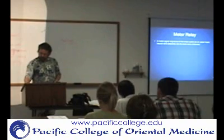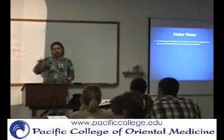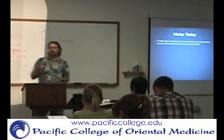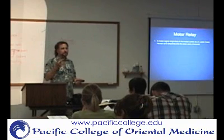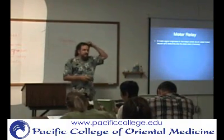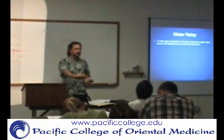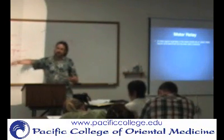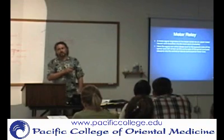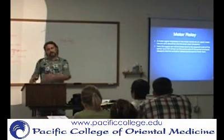Now let's do the motor relay — upper motor neuron and lower motor neuron. How many nerve fibers do we have for motor? Two. So you have upper motor neuron and lower motor neuron. It starts in the cerebral cortex; the first motor neuron goes down to the level of the spinal cord, usually the ventral or anterior horn. Then it synapses to the lower motor neuron, which crosses and goes out to the muscle. 90% of fibers cross at the pyramidal decussation in the medulla oblongata and descend on the opposite side; the rest cross at the level of the spinal cord.